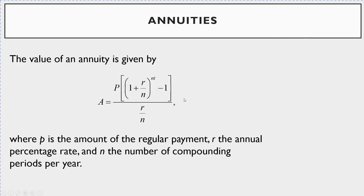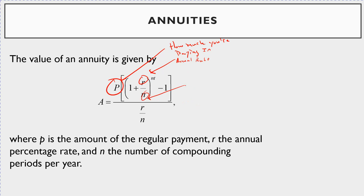I want to end this lecture talking about an application of these derivatives: annuities. The value of an annuity is given by: A = P · ((1 + R/N)^(N·T) − 1) / (R/N), where P is the regular payment amount, R is the annual percentage rate, N is the number of times compounded per year, and T is time in years.